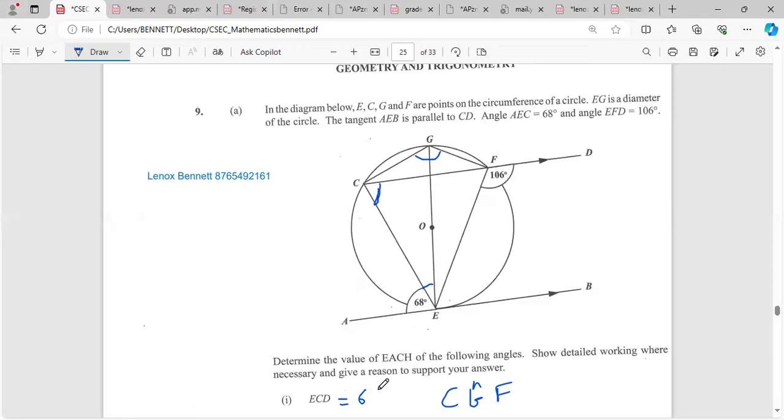So ECB would be 68 degrees. Remember the lines are parallel, so that forms a Z angle or an alternate angle. That was pretty straightforward - alternate angle or sometimes we see Z angles.